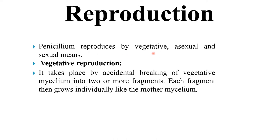Reproduction in Penicillium can be vegetative, asexual, or sexual. In vegetative reproduction, it occurs by fragmentation, which takes place by accidental breaking of vegetative mycelium into two or more fragments. Each fragment then grows individually like a mother mycelium.